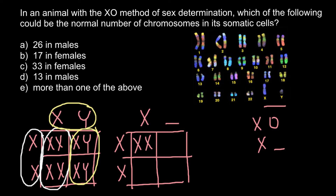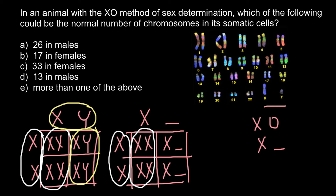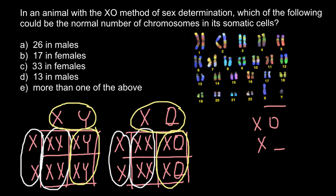When we cross a female with a male, the outcomes would be: female, male, female, and male. Males are missing one chromosome. When there are two sex chromosomes, that means it is a female — XX — and when there is only one, it is a male — X0.